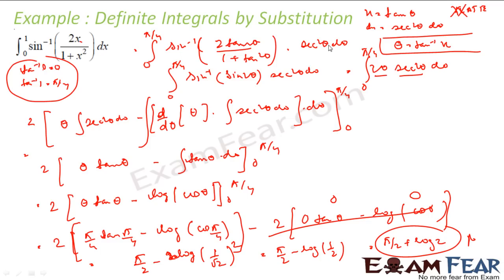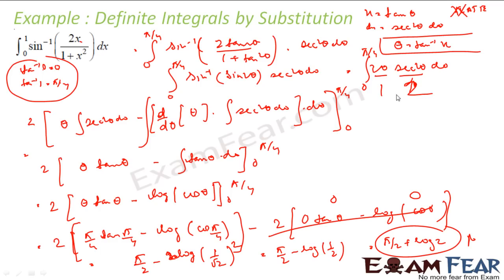We used substitution first, then changed the range from 0 to 1 into 0 to π/4. We got this integral and solved it by integration by parts. We took 2θ as the first function and sec²θ as the second, because by ILATE, algebraic was the first choice. If you are having issues, watch my previous video where I explained how to find integration of such integrands.